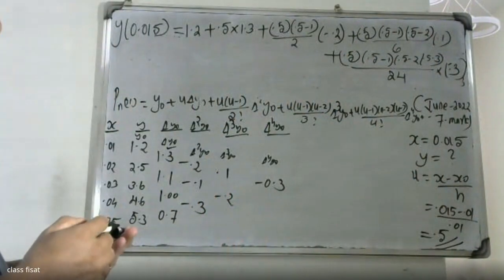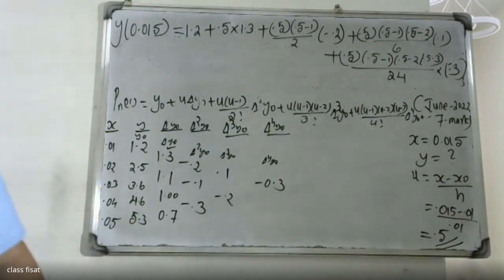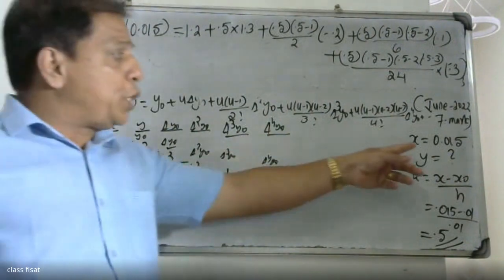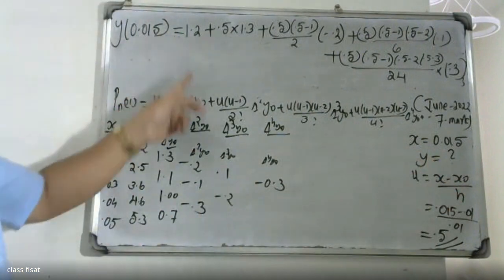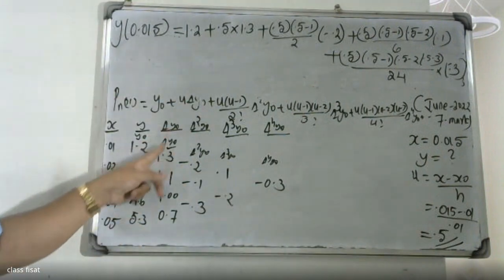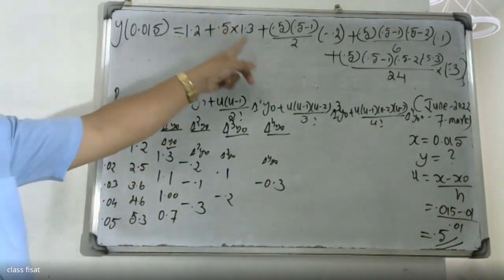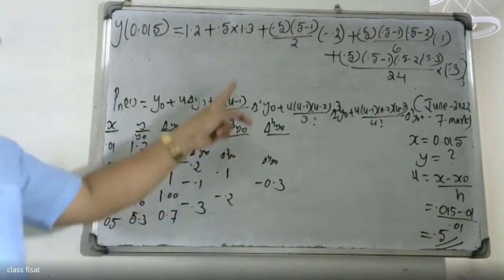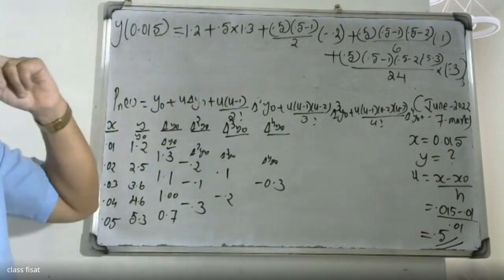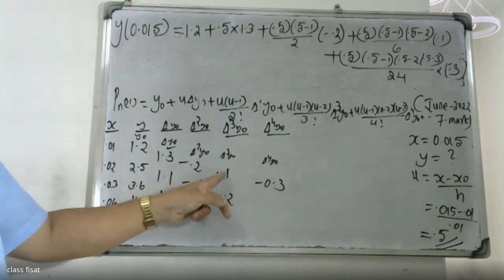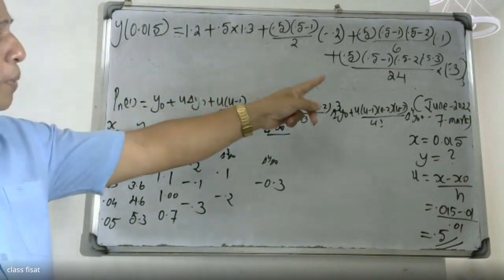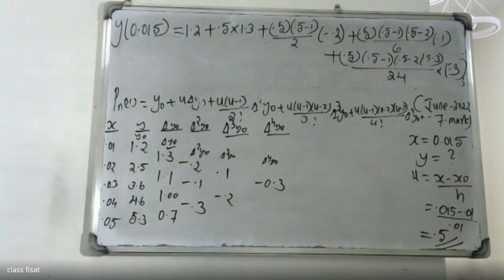Continuing the substitution: (0.5×(−0.5))/2 × (−0.2) and (0.5×(−0.5)×(−1.5))/6 × 0.1 and (0.5×(−0.5)×(−1.5)×(−2.5))/24 × (−0.3). We now balance and substitute all terms to get the final result.